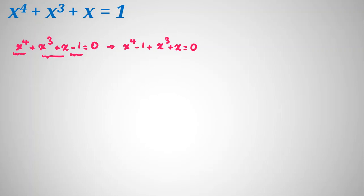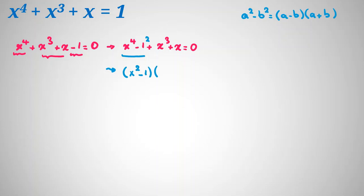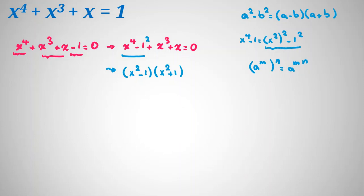Now let's factorize. First, a famous identity you should memorize: a squared minus b squared equals a minus b times a plus b. Here, x to the 4 minus 1 can be written as x squared squared minus 1 squared, so it factors as x squared minus 1 times x squared plus 1. We can write x squared squared by the power rule: a to the m to the n equals a to the mn. Then we apply the identity.